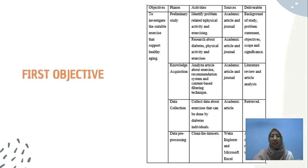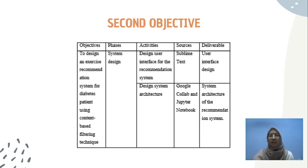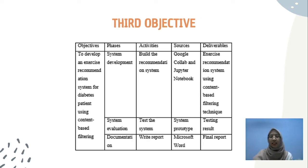The next slide shows the research framework. For the first objective, it consists of the preliminary study phase, knowledge acquisition, data collection, and data pre-processing. For the second objective, the phase involved is system design. The third objective consists of system development, system evaluation, and the last phase, documentation.